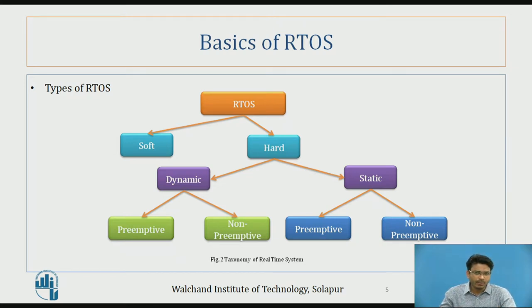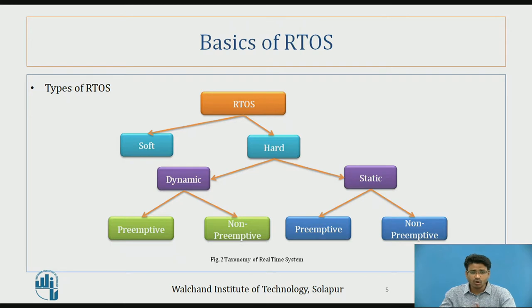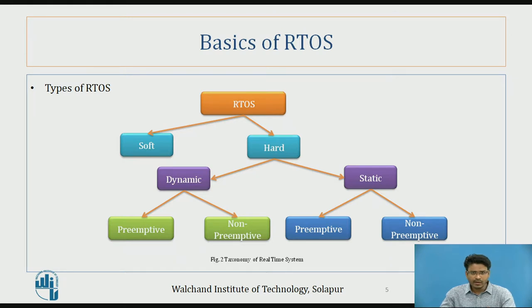Both static and dynamic have primitive and non-primitive variants. Primitive means it allows disturbances or interrupts from other processes. Non-primitive means it will not entertain any other process while executing its own task.